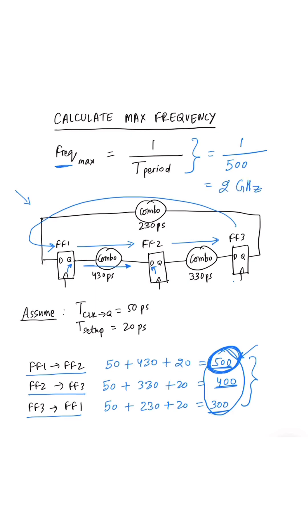If we apply a frequency of more than 2 GHz, then the first path which starts to fail is the FF1 to FF2 path, and we will see setup timing violations on this path. So 2 GHz is the maximum frequency at which this design can function reliably.